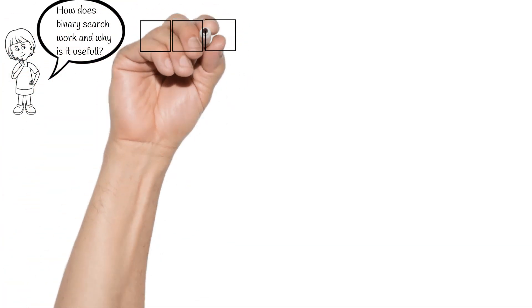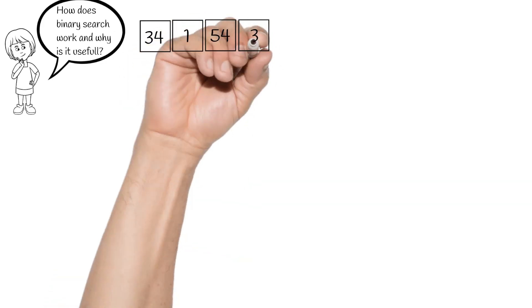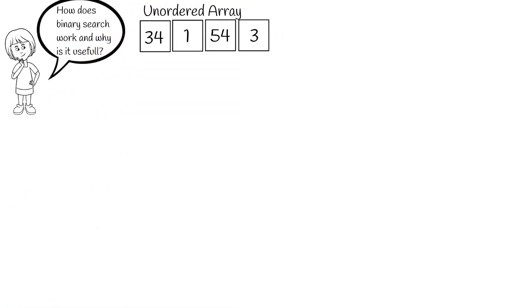To start, we should understand that in order for binary search to work, the array that you are searching must be an ordered array, both ascending and descending ordered arrays will work.